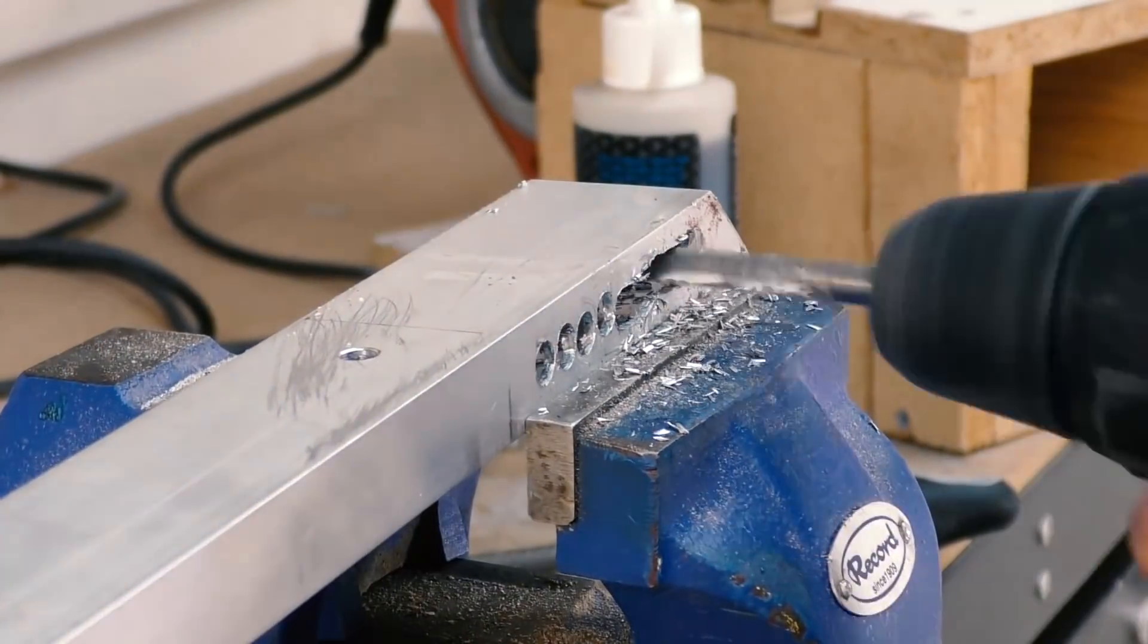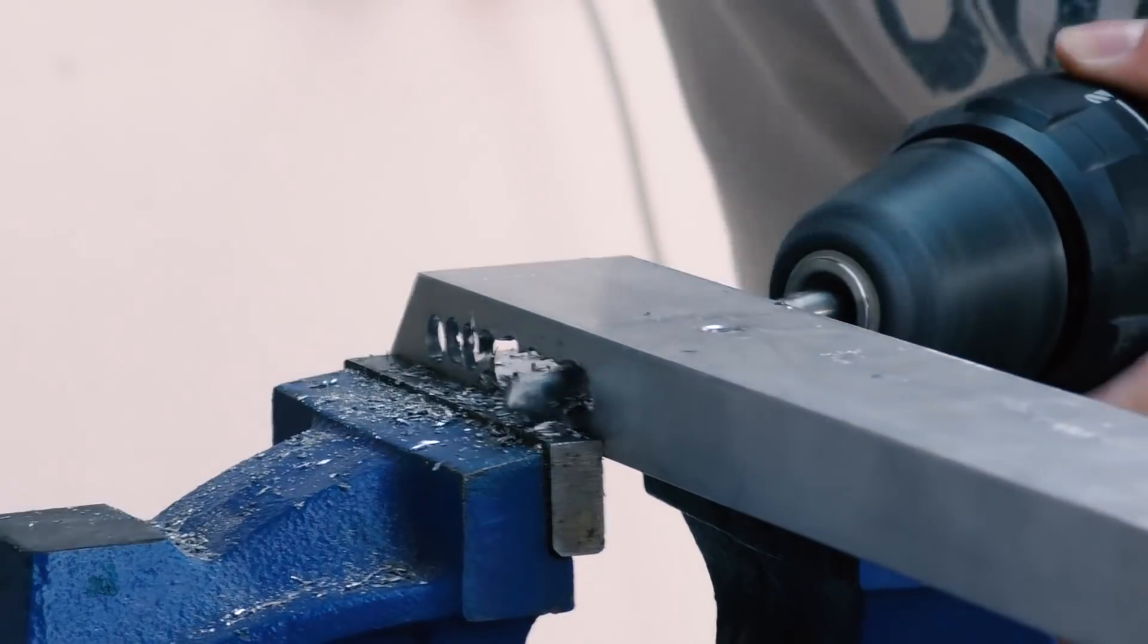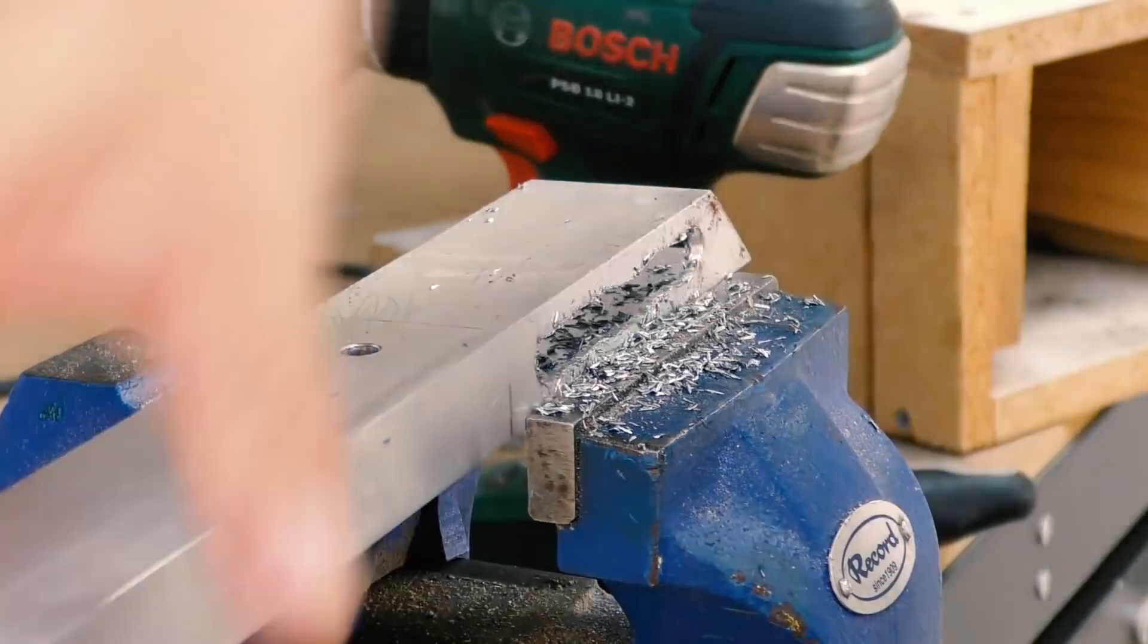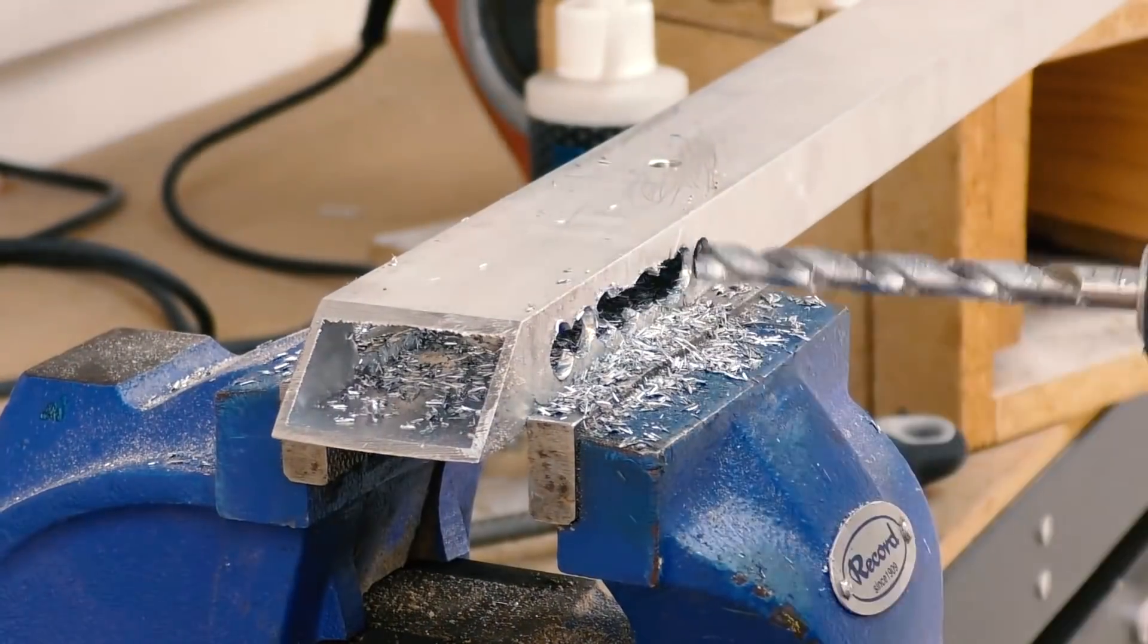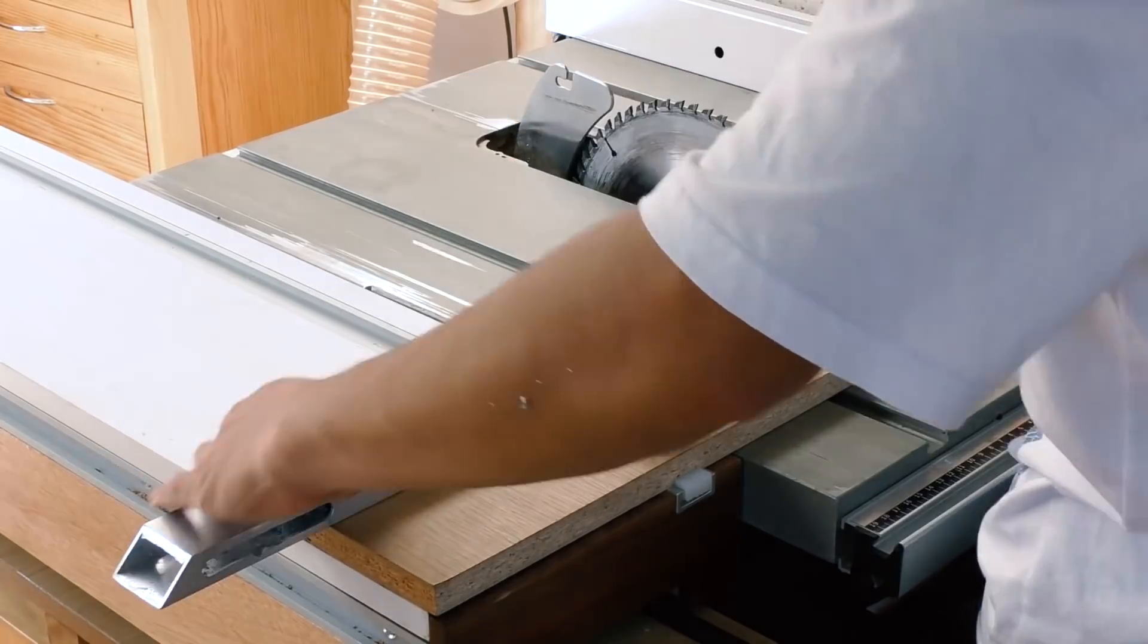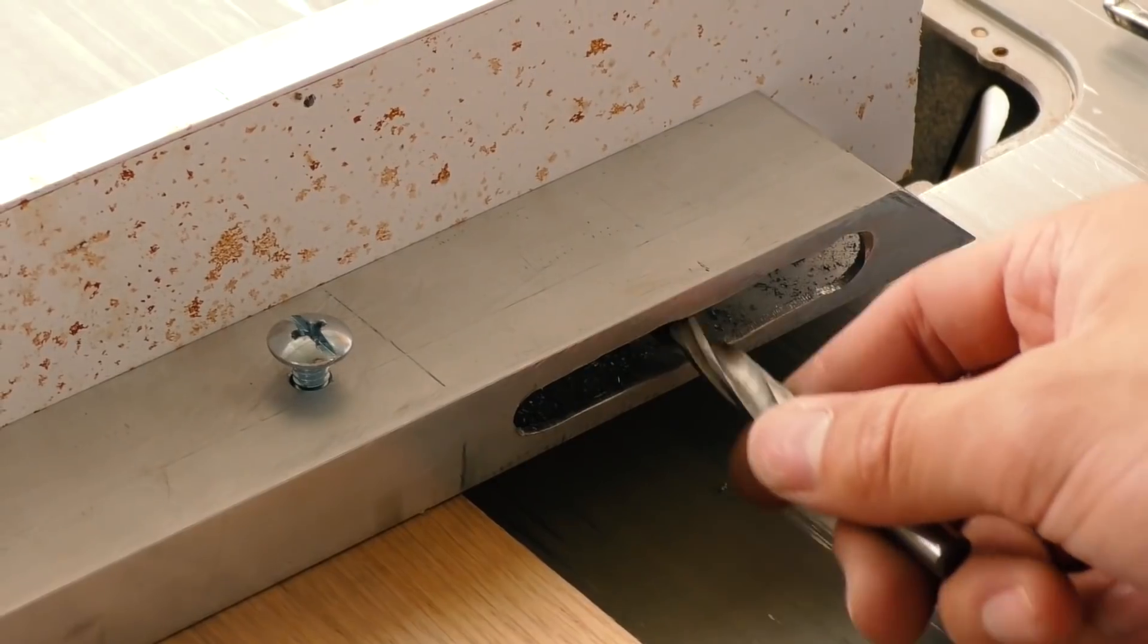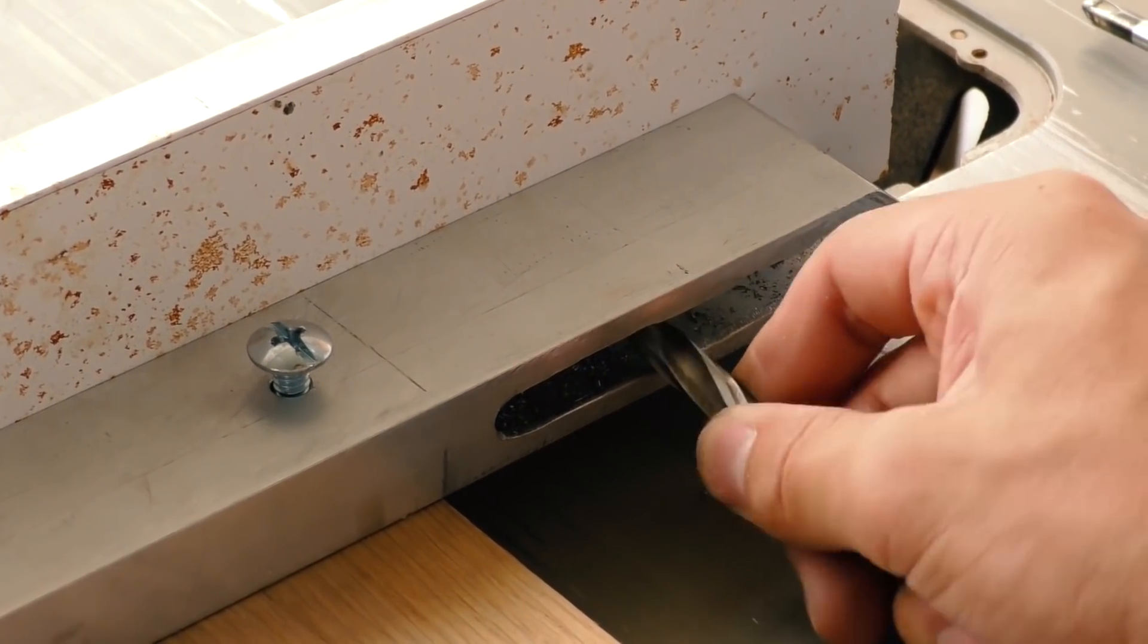To make the holes into slots, I am just tilting my drill bit back and forth. Then I can use a file to smooth it out. So about halfway I think would be good.